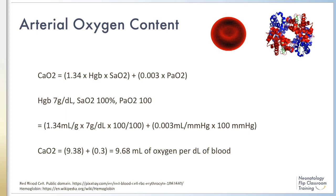Now, let's compare this to a patient with half the hemoglobin. We're going to keep the saturation and the PaO2 the same as the first patient. The product of the part of the equation of oxygen bound to hemoglobin is 9.38, and the product of the factors contributing to oxygen dissolved in the blood is 0.3 — that part's just like the first patient. Adding these together, we get 9.38 milliliters of oxygen per deciliter of blood. This is half the oxygen content of the first patient. This demonstrates how crucial hemoglobin is to arterial oxygen content.